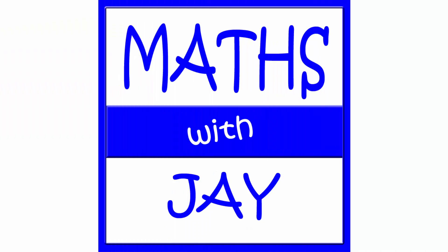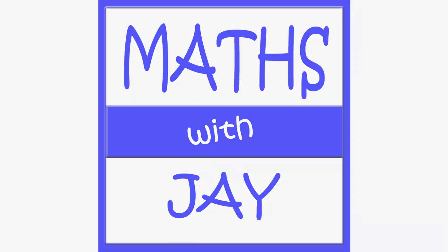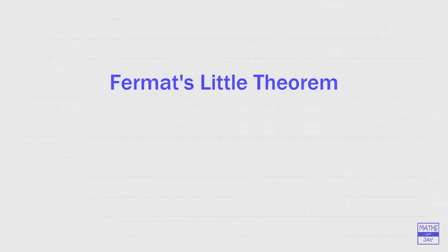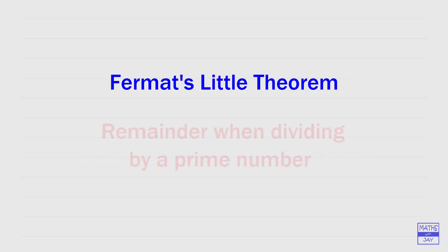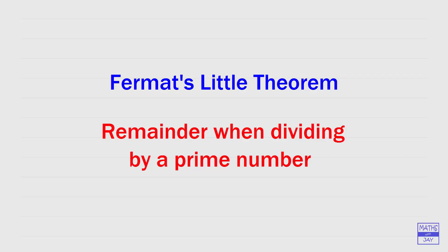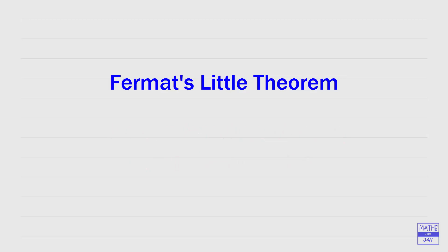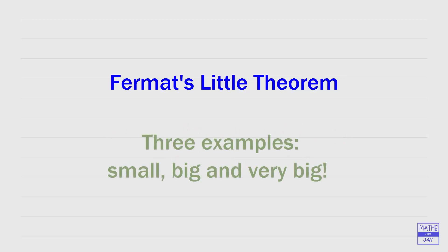Hello and welcome to Maths with Jay. Here we're going to see how we can use Fermat's Little Theorem to find the least residue of a really big number — another way of thinking about this is finding the remainder when we divide an enormous number by a prime number. We're going to look at three examples. The first will use a relatively small number so you can check the answer on your calculator, but usually you'd apply this method to numbers too big to fit on a calculator.